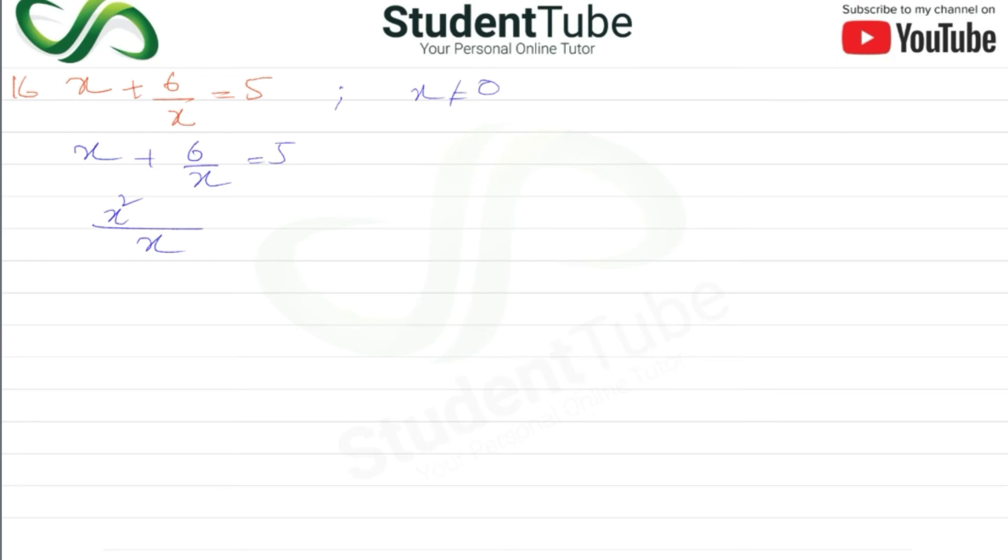Multiplying both sides by x: x² + 6 = 5x.